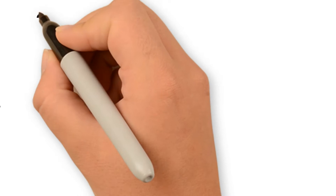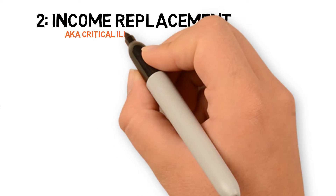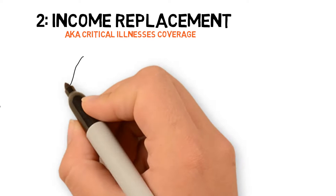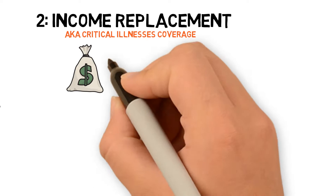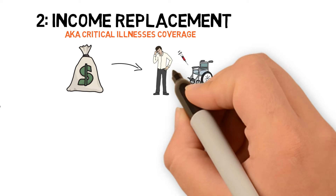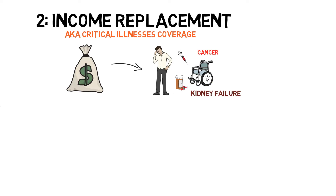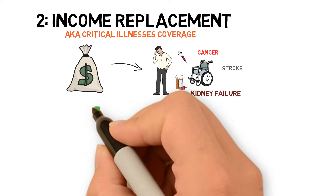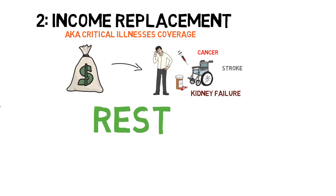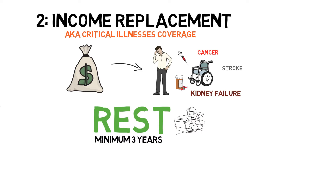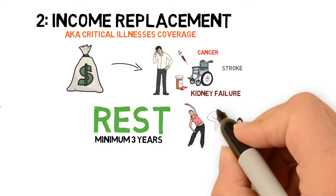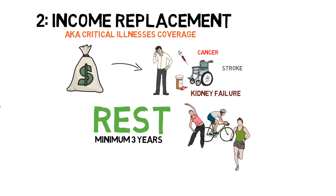Number two: income replacement, or what some may know as critical illness coverage. This is also a lump sum amount, but this is for the insured should any critical illnesses such as cancer, kidney failure, or stroke occur. When this kind of illness hits, rest is highly recommended — minimum 3 years. This means that instead of stressing out in the office, you can afford to resign and focus fully on your recovery. This is why it is known as income replacement — because it's supposed to replace your income when you're no longer able to work.